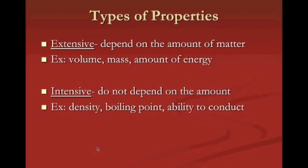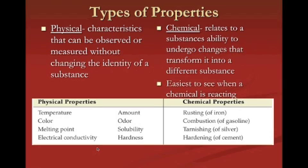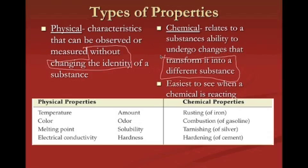The boiling point of water will always be 100 degrees Celsius at sea level. The two types of properties we'll focus on are physical and chemical properties. A physical property is a characteristic that can be observed or measured without changing the identity of the substance — physical never changes the identity. For example, measuring the temperature of water doesn't change what water is. Chemical properties, on the other hand, relate to a substance's ability to undergo change that transforms it into a different substance — after observing that chemical change, we have something brand new.